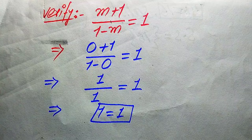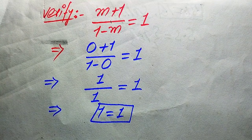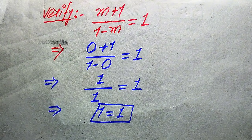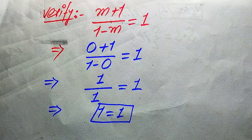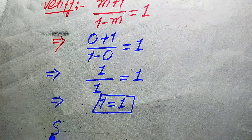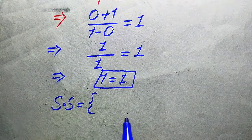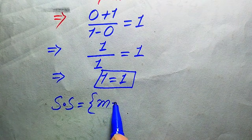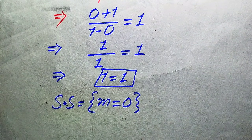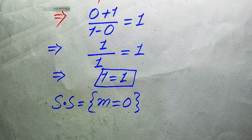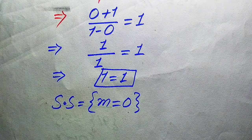The root which satisfies the given equation is called the solution — here m equals 0 is the solution. The root which does not satisfy the given equation is called the extraneous root. Unfortunately this question does not have any extraneous root, so we have only one root, which is the solution. The solution set of this question is m equals 0. Thank you for watching — please subscribe to my channel for more videos.